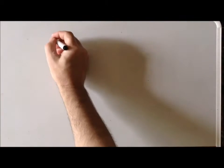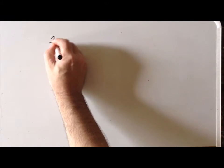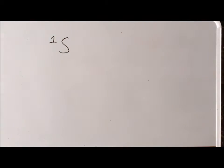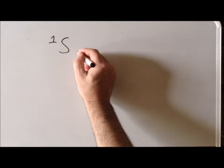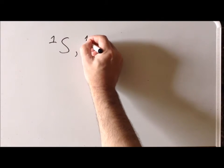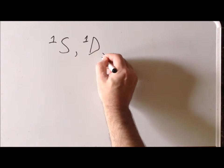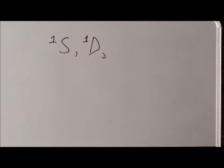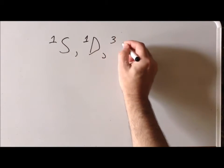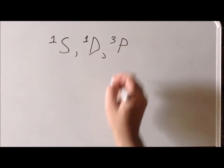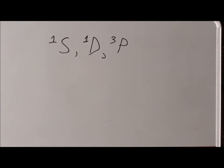So far we've been able to derive three spectroscopic term symbols. One of these was a singlet S, the second was singlet D, and the third was the triplet P.